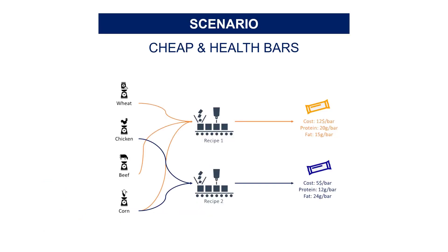So the scenario is simple. You are a research and development manager of a large food manufacturer, and you need to design a recipe for a new cheap and healthy meal bar. You have two types of ingredients available: meat — chicken, beef and mutton — usually very expensive, and non-meat like rice, corn, wheat and peanuts. These ingredients have different nutritional facts in grams per gram.